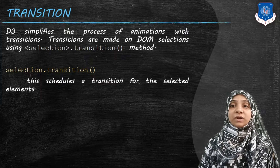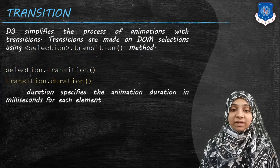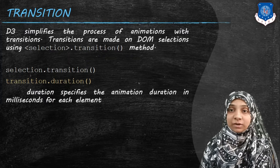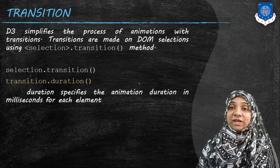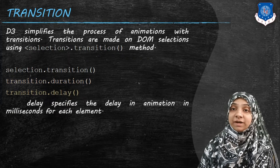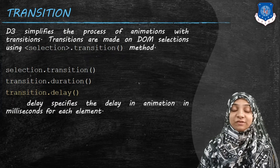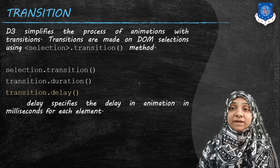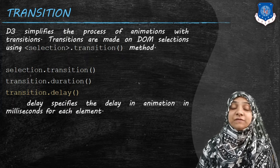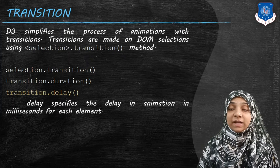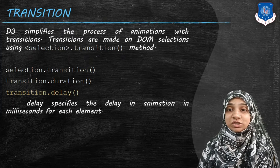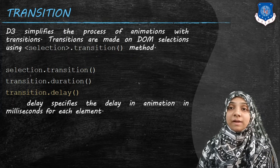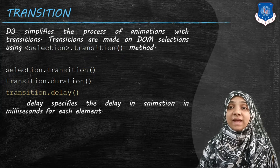Selection dot transition method is used to schedule or perform a new transition over a selected element. The second method, transition dot duration, specifies the time period of animation in milliseconds for each element. Transition dot delay specifies the time in milliseconds for which the transition must be delayed — the transition will wait for that delay period before applying the animation.